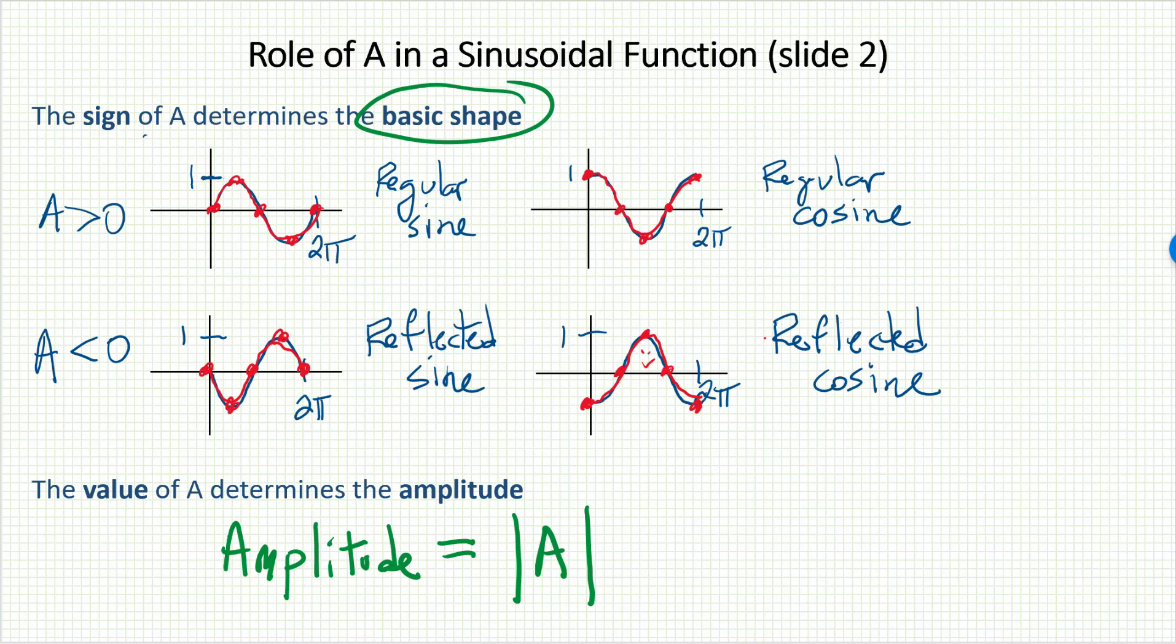Remember the example with negative two? The value portion of that number is the two. And that was the amplitude. The other helpful thing to note is that the amplitude didn't change the midline. It simply caused a vertical stretch or compress from the midline. Thanks for watching!